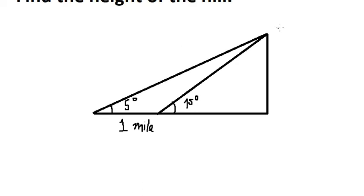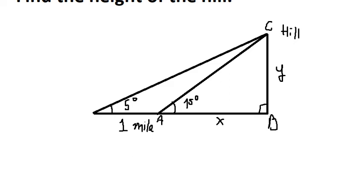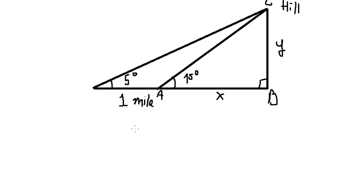They want to find the height of the hill. I will label this distance S, from A to B, and the top of the hill as C, with height Y. We know this is a right triangle, so we can use tan. tan(15°) equals Y over S.